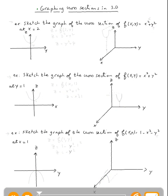The topic is graphing cross sections in 3D. Let's do the first example: sketch the graph of the cross section of f(x,y) = x² + y². At x equal 2, the cross section will be z = f(2, y), which means wherever we see x we plug 2, so that would be 2² + y². In other words, z = y² + 4.